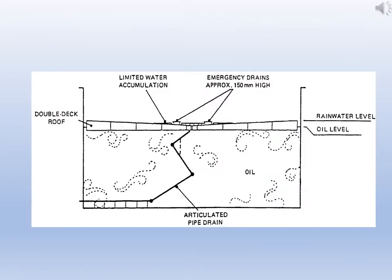Another picture shows the concept of the floating roof. Mechanical arrangements are there to raise and lower the floating roof system — double deck roof — and there is space for emergency drains, limited water accumulation or rainwater level, and oil level. Different arrangements are there. A mechanical ladder system or hinge and pulley systems are used to lift and lower the floating roof.